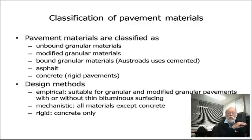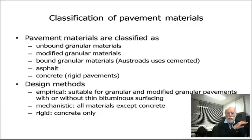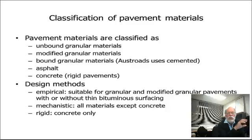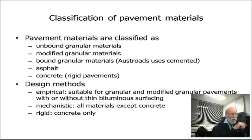The design methods we have include an empirical chart which is Figure 8.4 of Austroads, which just about everyone knows. That is suitable for any granular material or modified granular materials, with or without a surfacing — so you can use that chart for a gravel road or an unsealed road, and for asphalt thicknesses up to about 40mm. Once you get beyond 40mm, you're starting to induce tensile strains in the asphalt itself. It's not just a wearing course — it's becoming a significant player in the pavement strength, requiring special considerations.